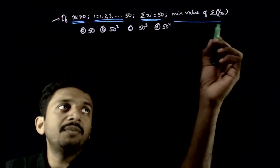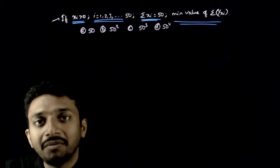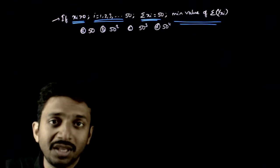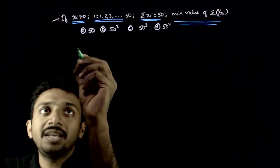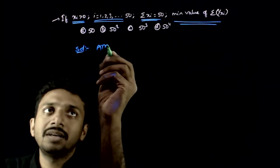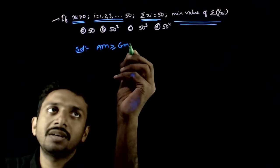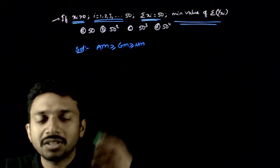And you are asked to find the minimum value of Sigma 1 by Xi. Minimum value of Sigma 1 by Xi. So usually we use the inequality AM greater than or equal to GM greater than or equal to HM.